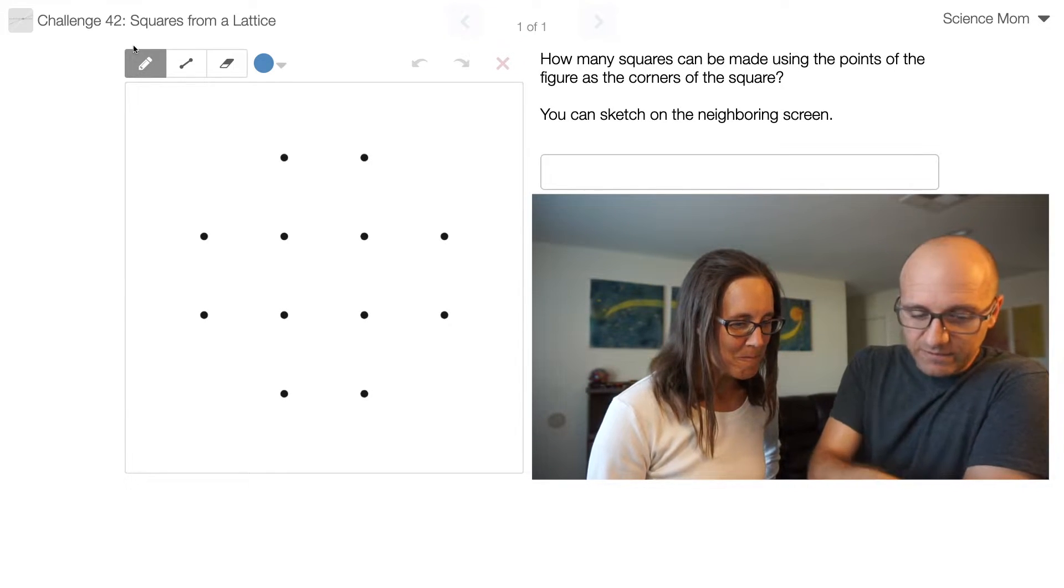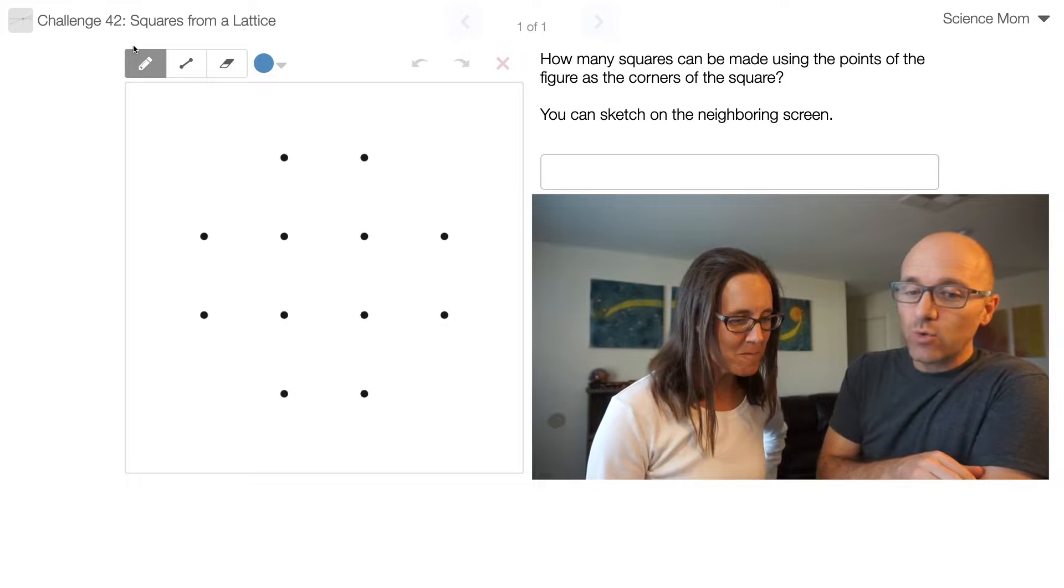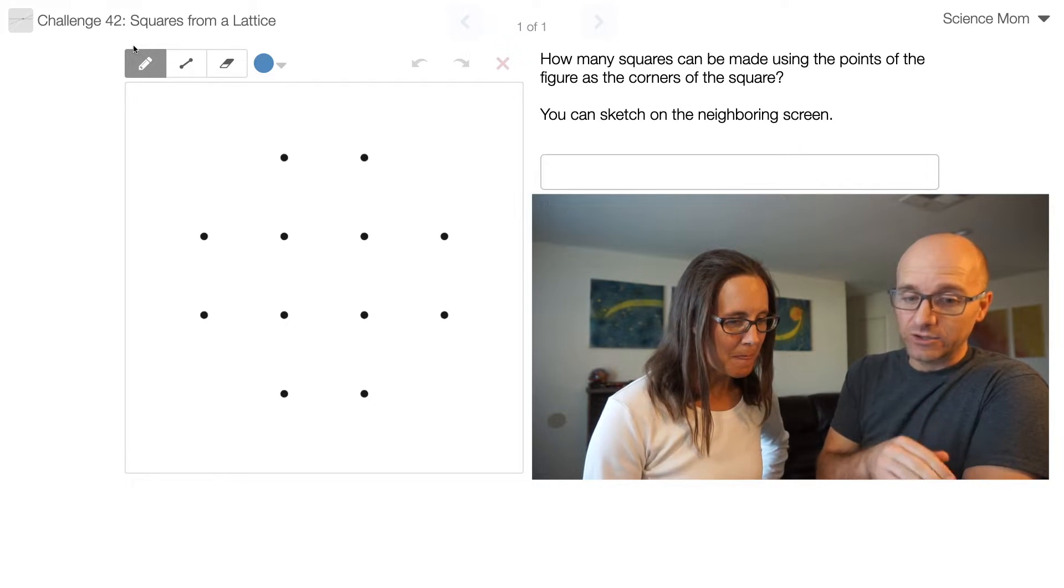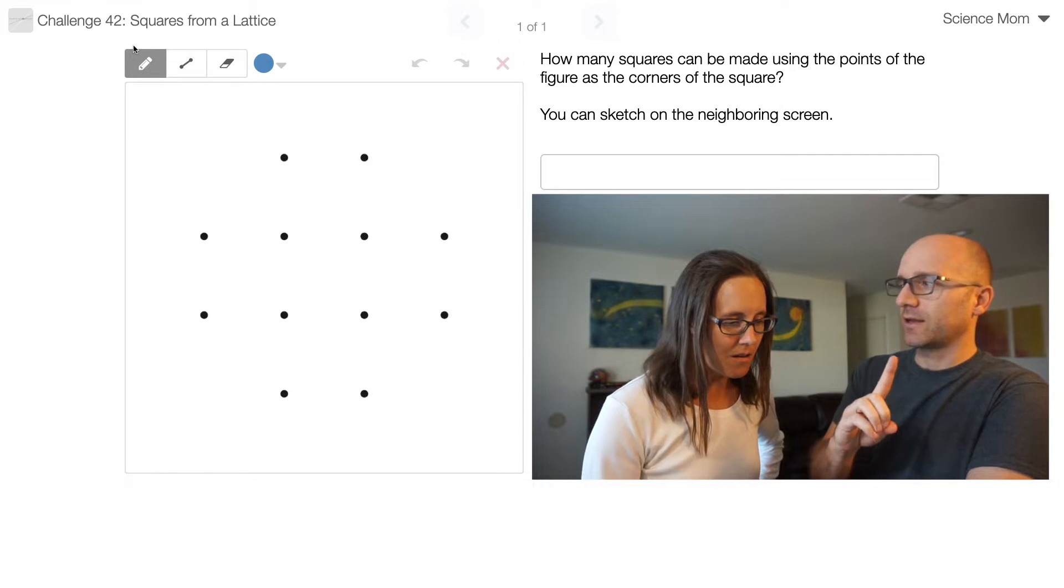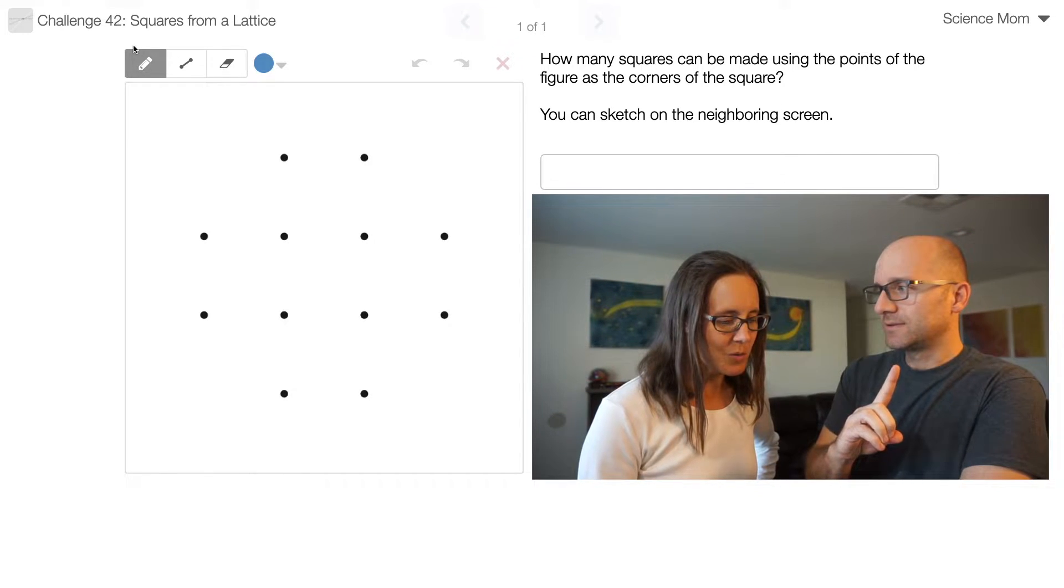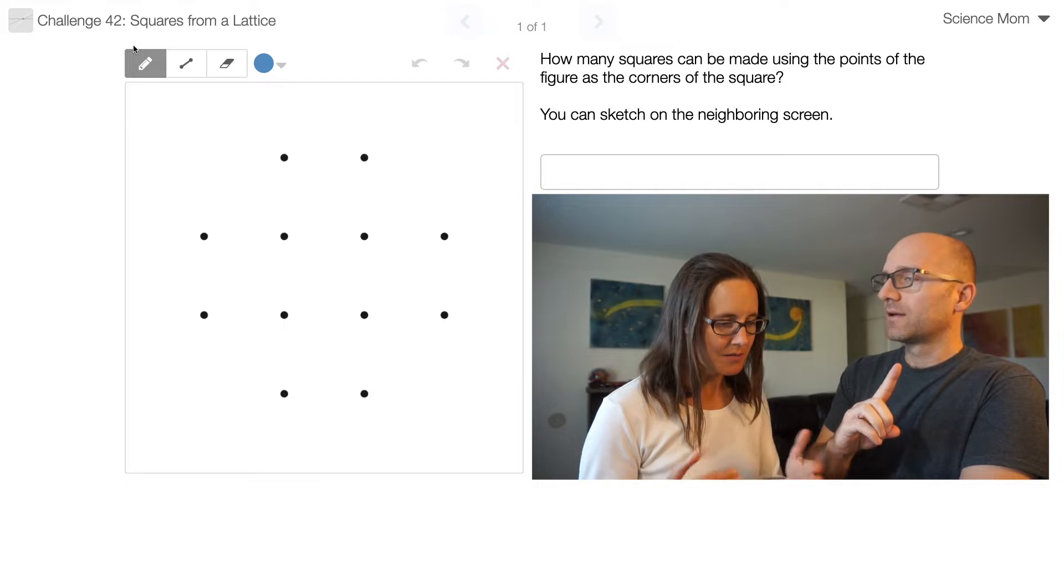So the question is, based off of these 12 points here, how many squares can be made just using those points as the corner points? Do you understand the question? You don't get to start thinking about it. So squares, not rectangles. They have to have equal sides.